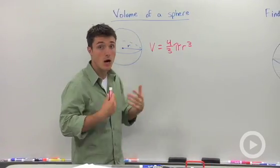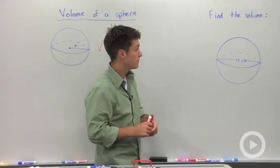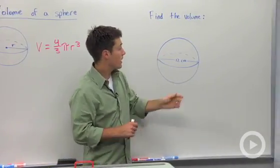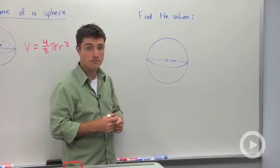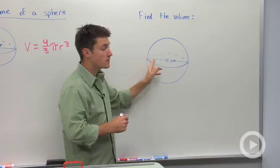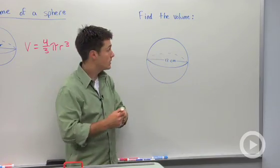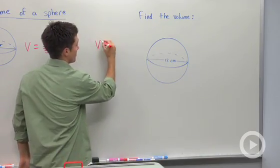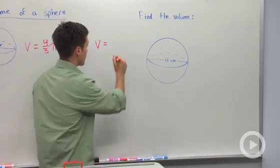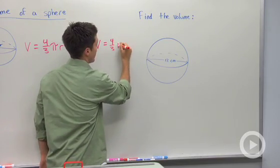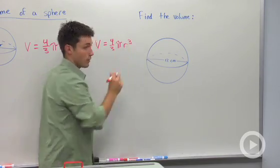So let's look at a quick example about how we could use that formula. Here we have a sphere, and we're being asked to find its volume. Now, notice that what they give you is not a radius but a diameter. So we're going to start off by writing our formula, volume equals four-thirds pi times your radius cubed.